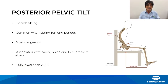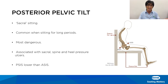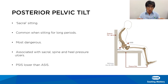The first abnormal posture is posterior pelvic tilt, also called sacral sitting. It's common when people sit for long periods of time. Even a person with normal posture may slide into this, and that's okay if they can correct it. It becomes a problem when someone slides into this posture and cannot correct it, because it can result in pressure ulcers in the sacral and heel areas.